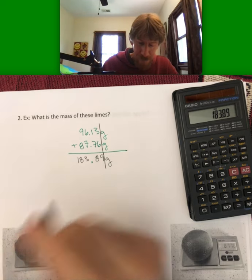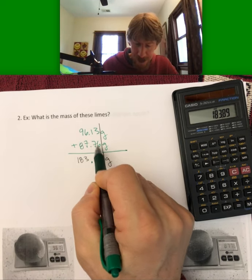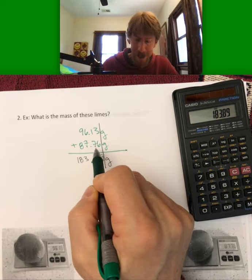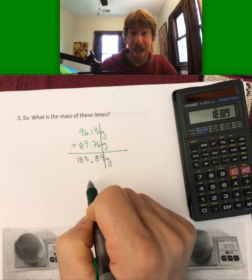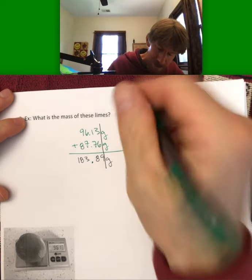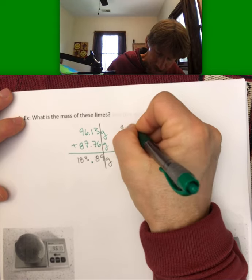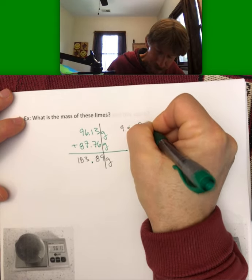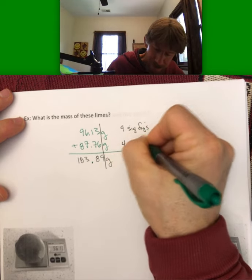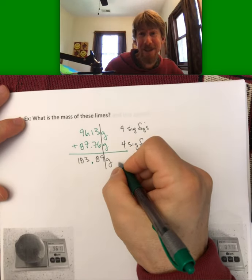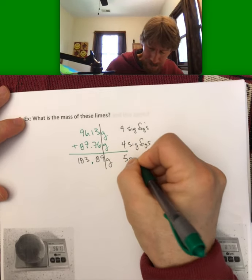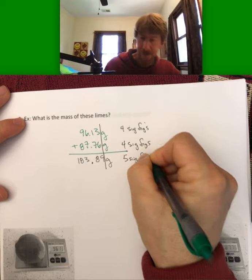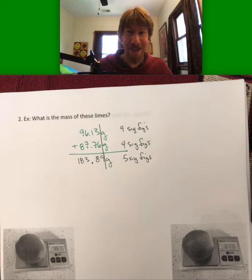And what you'll note now is that with four sig figs in each of the numbers that I'm adding, my final answer has five sig figs. So adding up two numbers with four sig figs, and my answer has five sig figs. Wow. Cool. Actually, I think it is pretty cool.